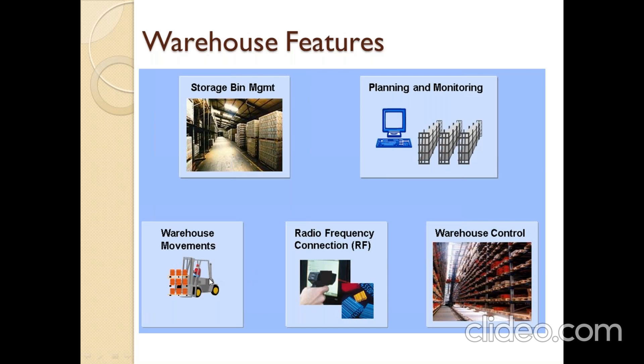Third is warehouse movements. For example, if a material's shelf life has expired and needs to be scrapped, or if I need to do kitting — like for Diwali, a retailer clubs badam, cashews, and kismiss into one bundle. I can use movement types 309, or in retail 317 and 319, to club and issue to respective stores. Physical inventory activities also fall under warehouse movements.